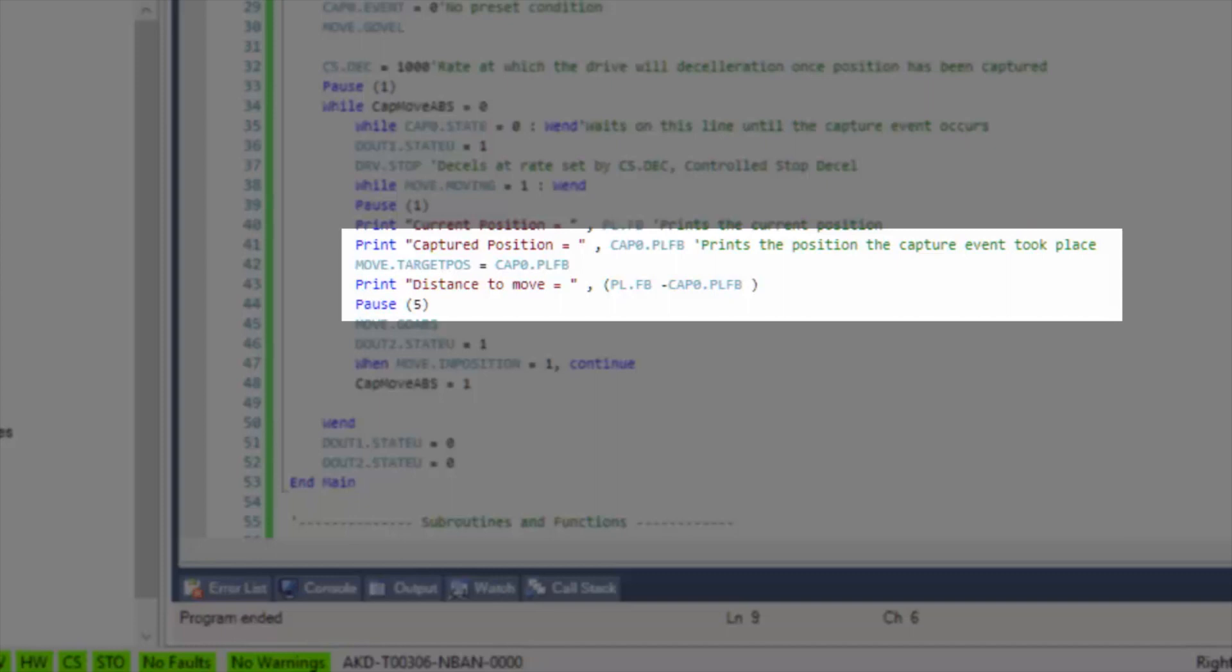The distance traveled during deceleration can be calculated by subtracting the captured position from the current position.